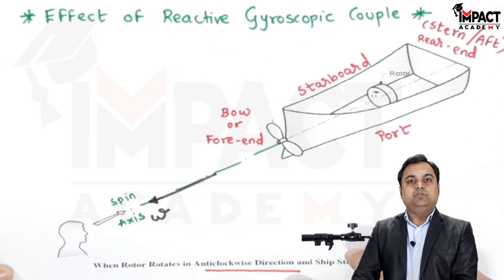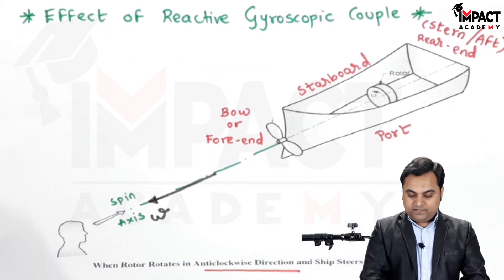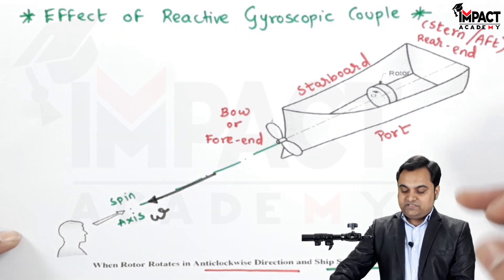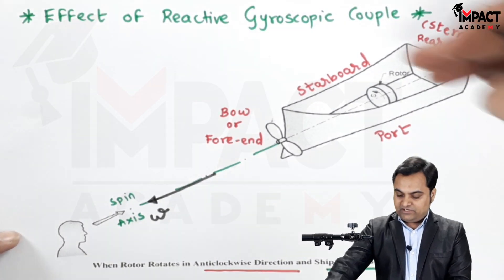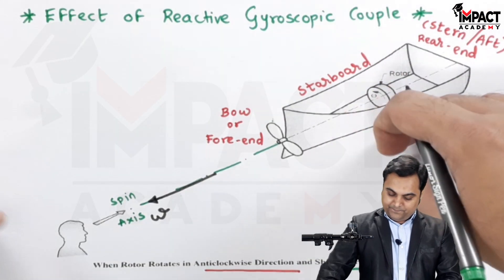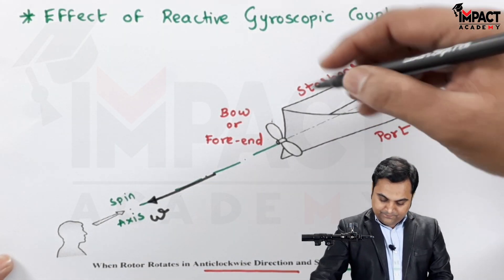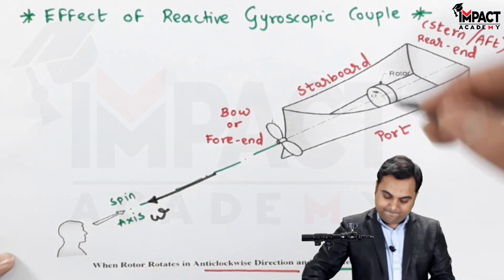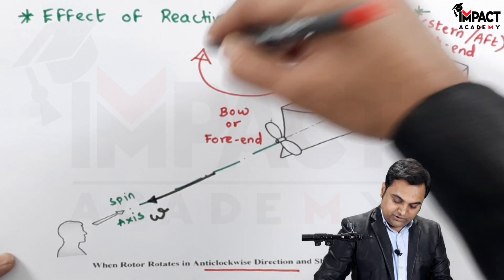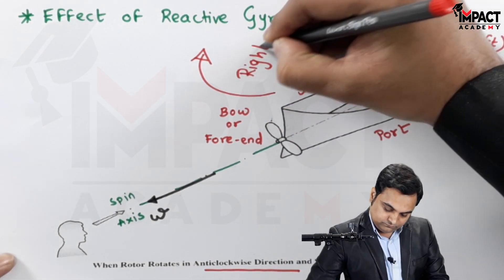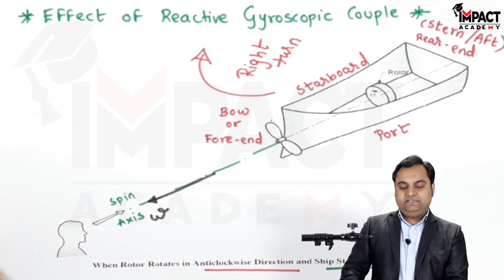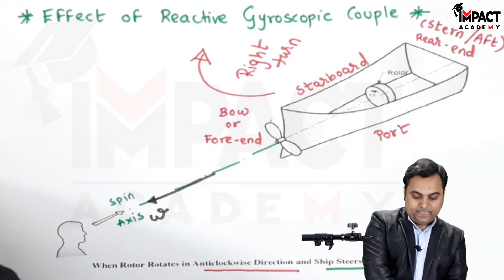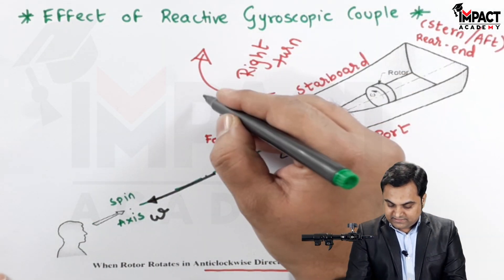Since the ship is steering to the right, we observe it as if sitting inside the ship as it takes a right turn. When the ship takes a right turn, it is rotating about a vertical axis, and that vertical axis is called the axis of precession.